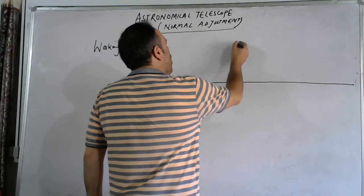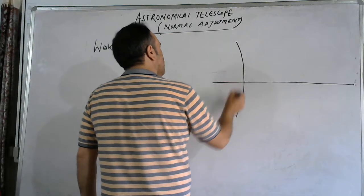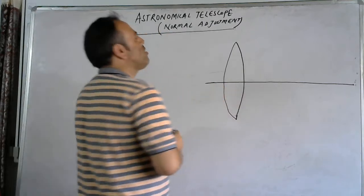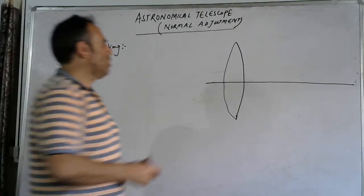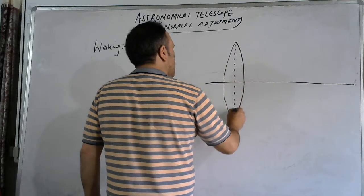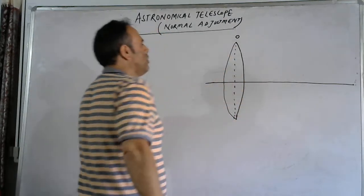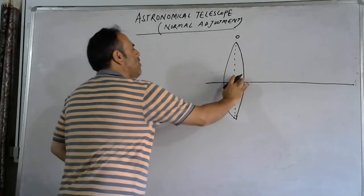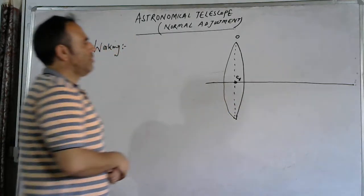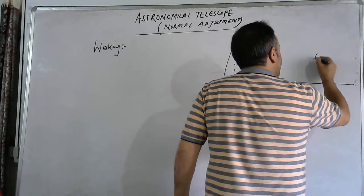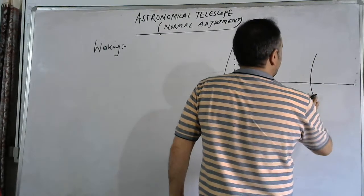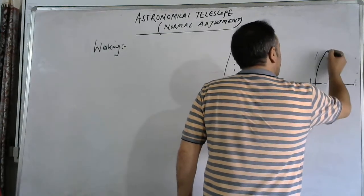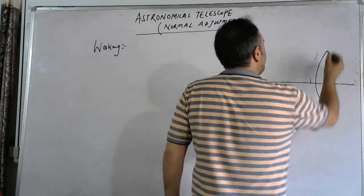Suppose this is our objective. In the case of this astronomical telescope, this objective has a large focal length and large aperture. Let us name this O, and this is its optical center C1. The eyepiece is a convex lens of short focal length and small aperture. This is our eyepiece. Let us denote this eyepiece by E, and its optical center as C2.